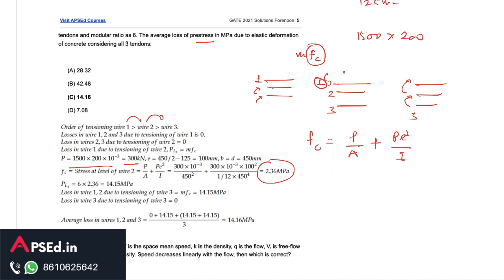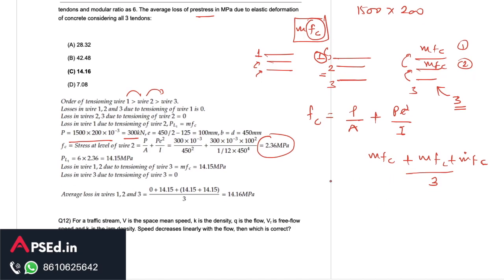Now 2.36 we will get the loss of stress in tendon one when second tendon is tensioned, then we will get it two more times as mfc in first one and second one when the tendon 3 is tensioned. We will be getting the same term mfc same value three times, so mfc plus mfc plus mfc. We need to find out the average so the average will simply become 6 into 2.36 times 3 divided by 3, so 6 into 2.36 that is coming as 14.16 MPa. That is the required answer here.